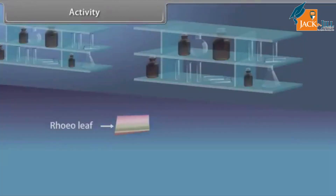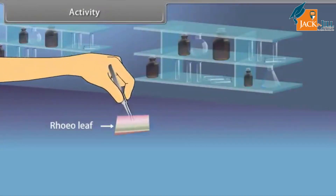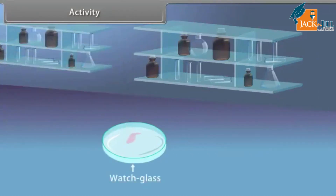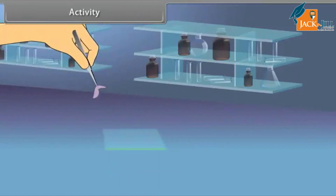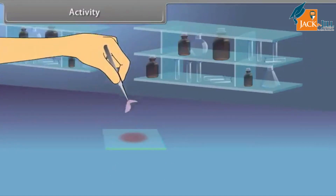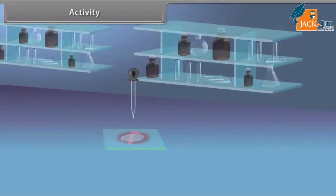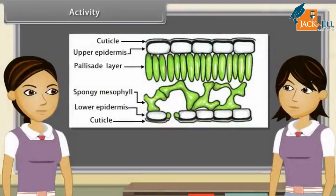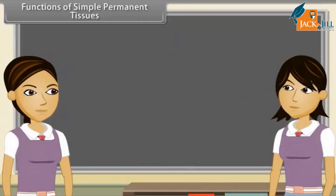Take a leaf of rhoeo. Stretch and break it by applying a little pressure on it. When you stretch it, some peel or skin projects out from the cut. Remove this peel and keep it in water in a petri dish. Then add a few drops of safranin and wait for two to three minutes. Transfer it on a slide with a drop of glycerine and cover it with a cover slip. When you observe it under the microscope, you will find different layers of cells. The outermost layer of cells is known as epidermis — it is usually made of a single layer of cells, and the outer and side walls of epidermis are thicker than the inner wall.